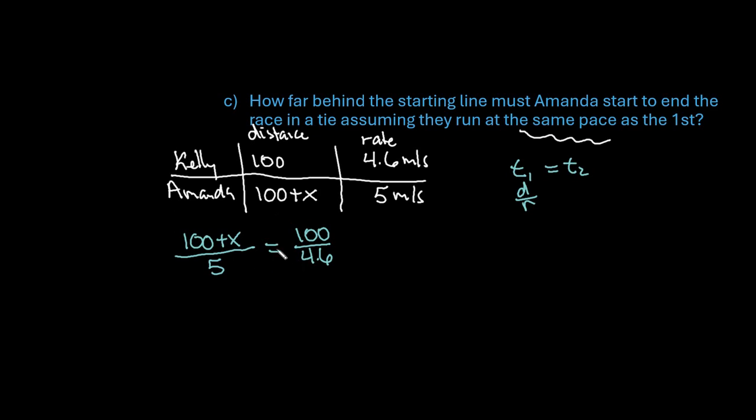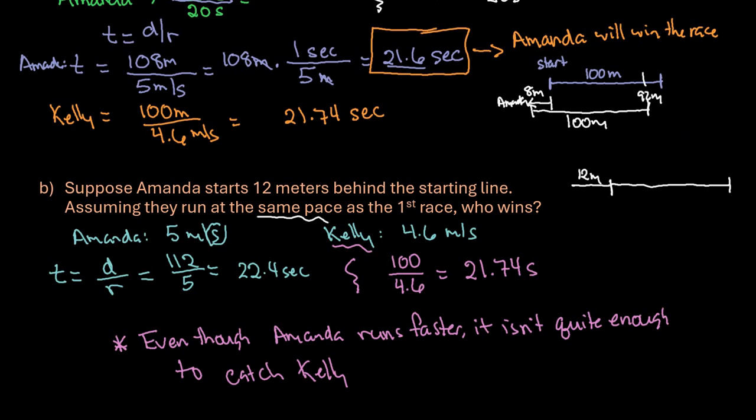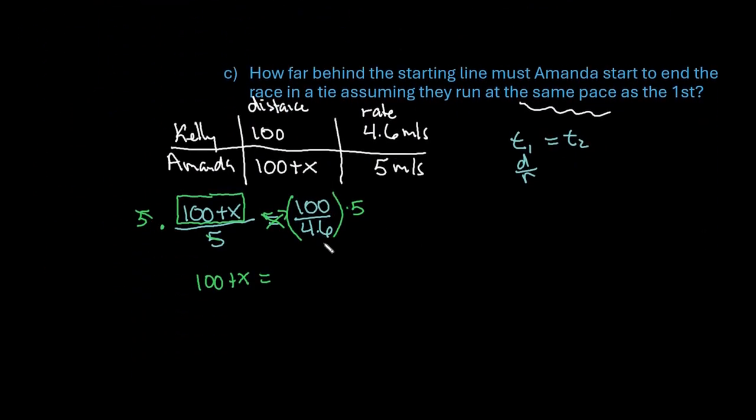Now you have a couple different options with solving this. I could cross multiply and end up distributing in the 4.6, but to me it's easier because my x is on this side and it's in the numerator. The opposite of dividing is multiplying. So personally, I would just take this amount over here and multiply it by 5. So I'm just going to multiply both sides by 5. That way I'm just left with 100 plus x. Then I would take and plug into my calculator. It doesn't matter which way you do it.